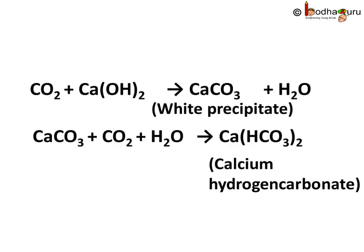After passing a little more carbon dioxide, the precipitate would vanish as calcium carbonate would get converted into soluble calcium hydrogen carbonate, which is also known as calcium bicarbonate, which is Ca(HCO₃)₂.